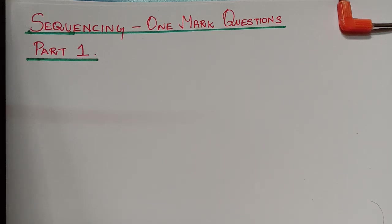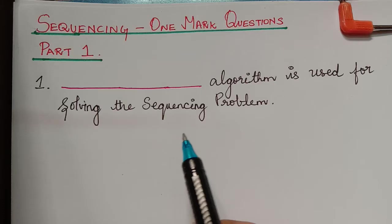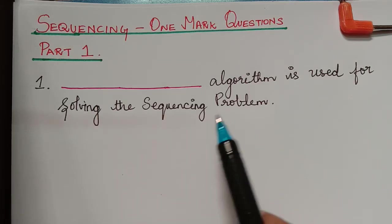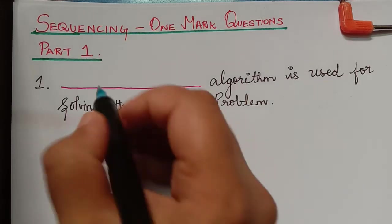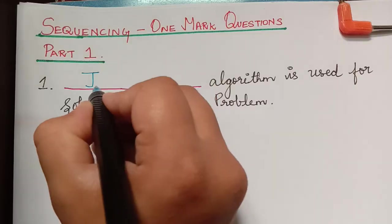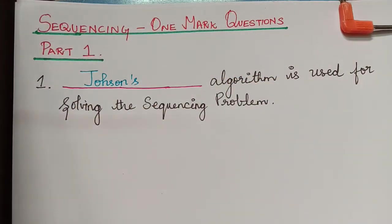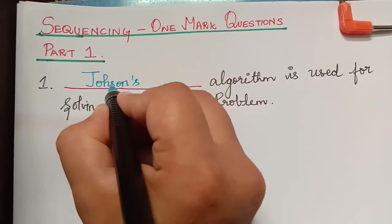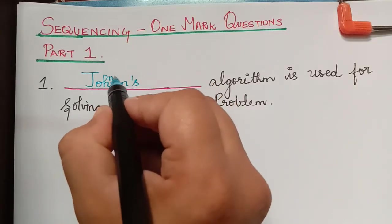Hello students, we shall now deal with one more questions from the topic sequencing. The first question is: dash algorithm is used for solving the sequencing problem. The algorithm used to solve a sequencing problem is known as Johnson's algorithm. So the answer is Johnson's algorithm. Kindly make this correction.